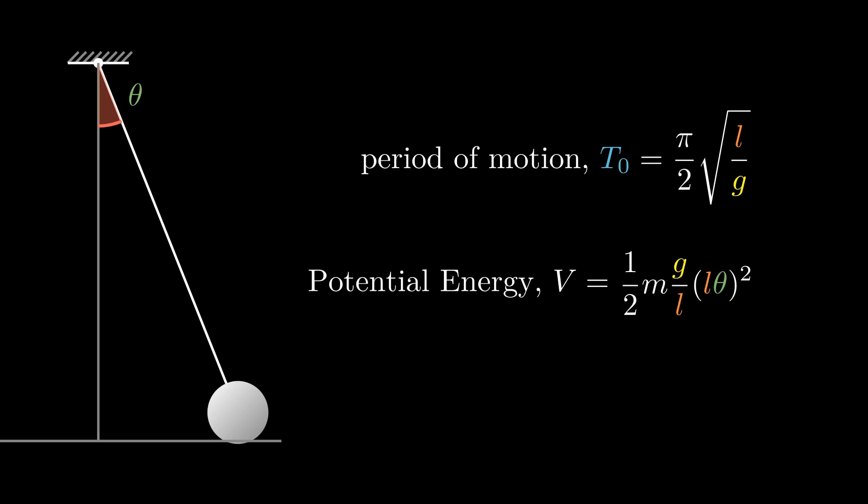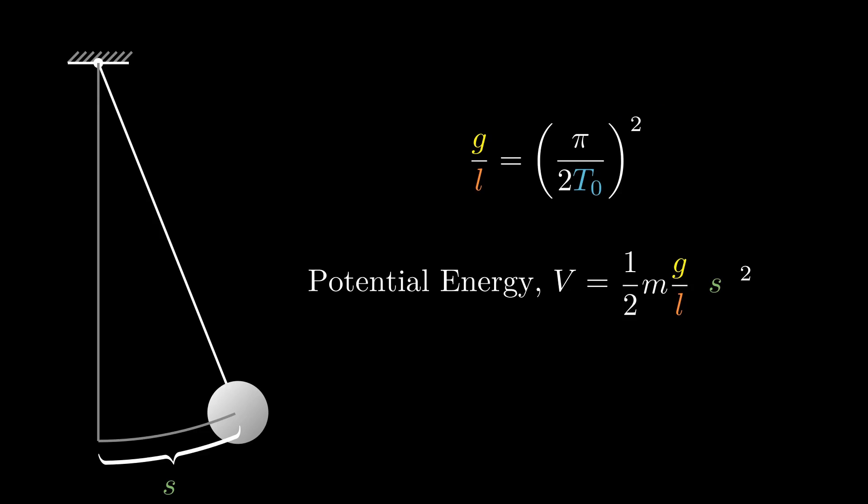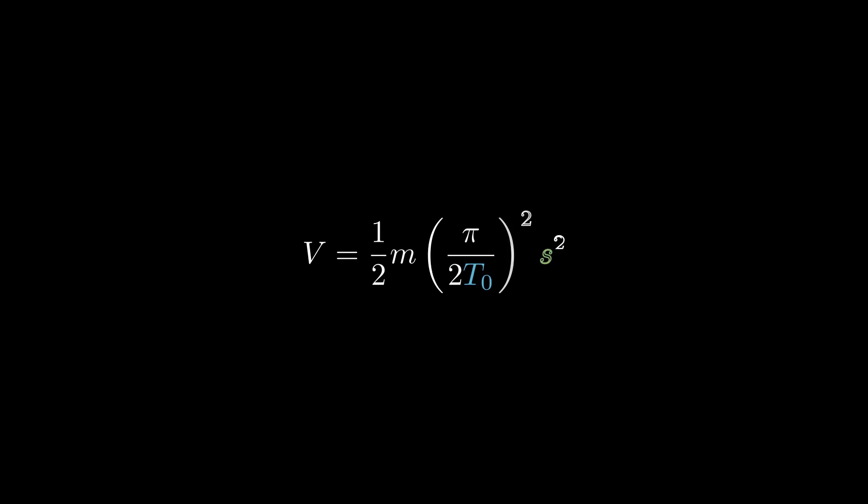Rather than using the parameter theta, which is specific to the case of a simple pendulum, we use the arc length as the main parameter. Eliminating the g by L term using the expression for the time period, we finally see that the potential energy of an object sliding along the tautochrone curve must be directly proportional to the square of the arc length of the curve.